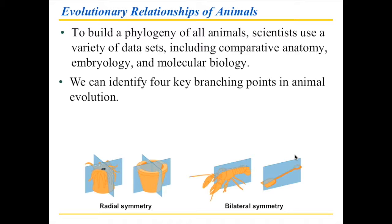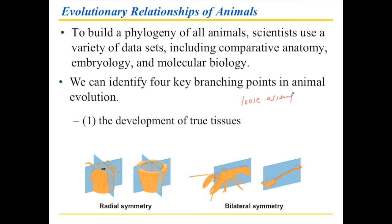A branching point is where a population of organisms moves along a branch and then something happens and the branch splits. We're looking at this on a large scale — not just speciation, but large-scale evolution. The first of the four branching points is the development of true tissues. The development of true tissues means you don't just have a loose assembly of cells — you're starting to go to an actual cell and tissue arrangement. In tissues, cells are not able to just go out and be by themselves. This is a major thing in the development of multicellularity.